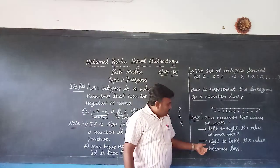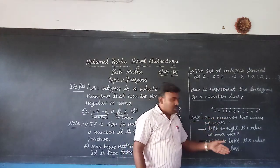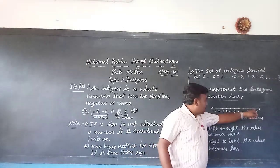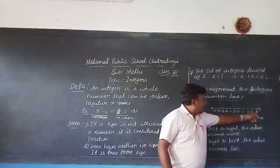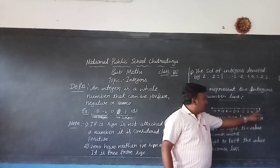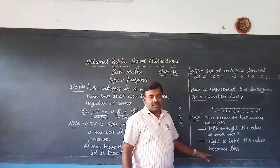And the second one is on the number line when we move right to left. So here, right to left, the values becomes less. See, 5, 4, 3. So right to left, the values becomes less.